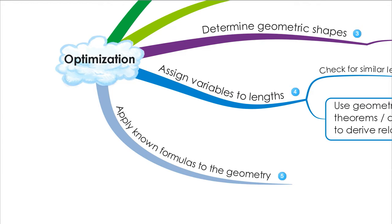Apply known formulas to the geometry. For example, if you're dealing with a right triangle, you're going to use the Pythagorean theorem. If you have a trapezoid, use the trapezoid formula. Different figures, different formulas. Make sure you know your volume formulas, area formulas, surface area formulas, and so forth.